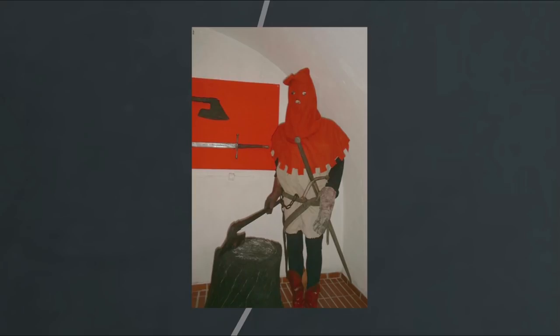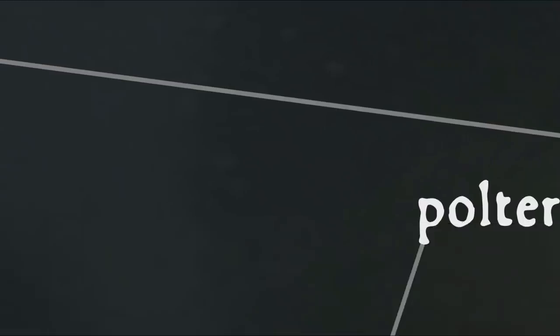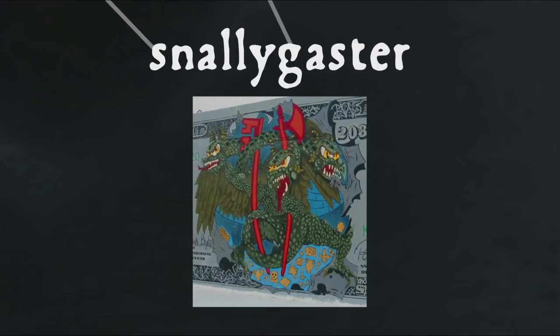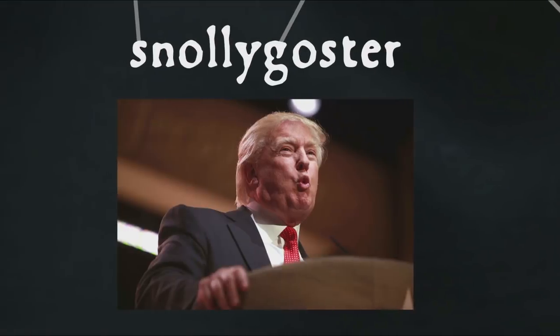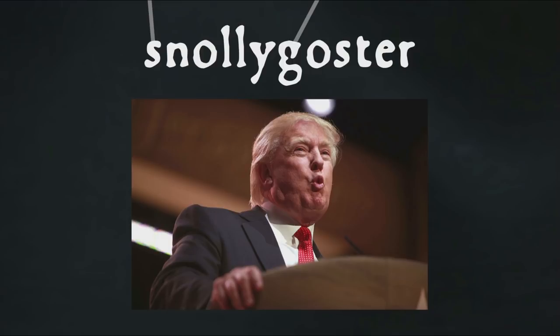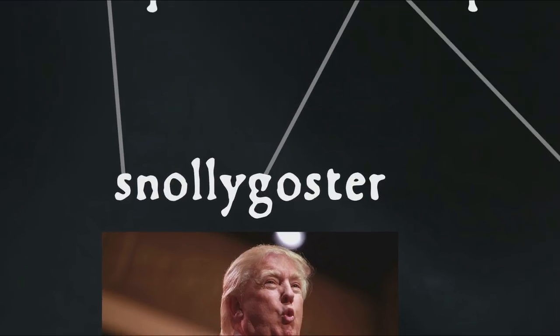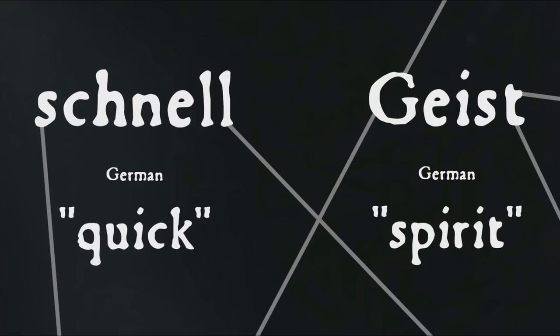There are of course a few cognates in English related to the word ghost, perhaps most amusingly the Americanisms snallygaster — a kind of mythical monster supposedly found in Maryland that was said to prey on poultry and small children — and snallygaster, which means a shrewd person devoid of principles, especially a politician. Both words come from German schnell, meaning quick, plus geist, spirit, perhaps through Pennsylvania Dutch, actually a dialect of German.